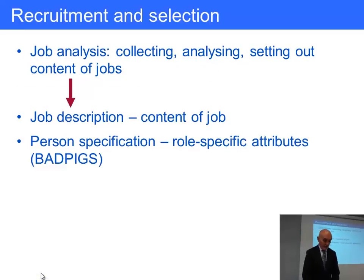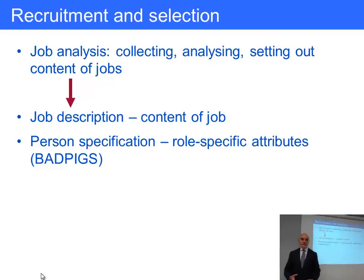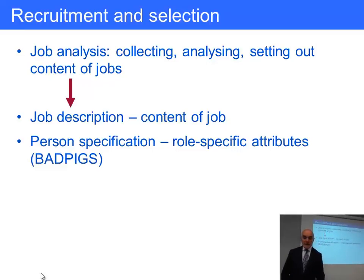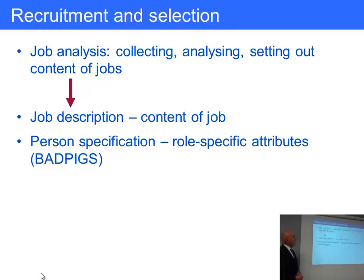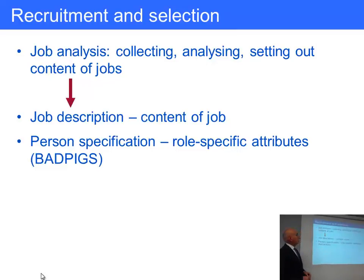The first part of recruitment and selection, once you have an idea of how many people you need, is to find out what the job actually is. This is called job analysis. You might think people will know what a job is, but you can't always tell from the job title alone.